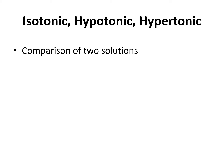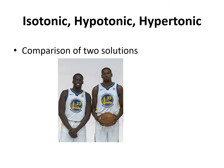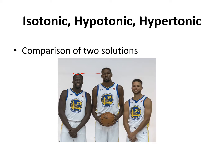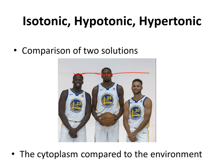An analogy would be the height of people. When you compare the height of people, you can refer to someone as being taller or shorter. For example, when you compare Draymond Green to Kevin Durant, Draymond Green is shorter than Kevin Durant. But if you compare Draymond Green to Stephen Curry, Draymond Green is taller than Stephen Curry. In terms of osmosis problems, what you are comparing is the cytoplasm compared to the environment — the solution inside the cell compared to the solution outside the cell.